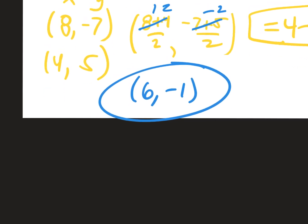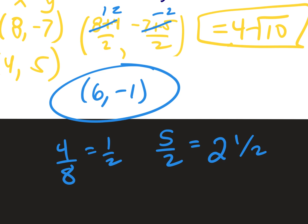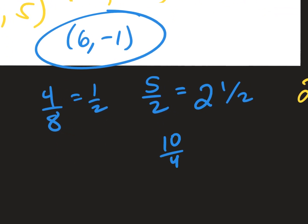If you ended up with your midpoint coordinate being 4 over 8, is that an acceptable answer? No — that becomes 1/2. If you get 5 over 2, is that acceptable? Yes — an improper fraction that's simplified is fine. You could also say 2 and 1/2, but why take the extra step where you might make a mistake? If you had 10 over 4, reduce it to 5 over 2.